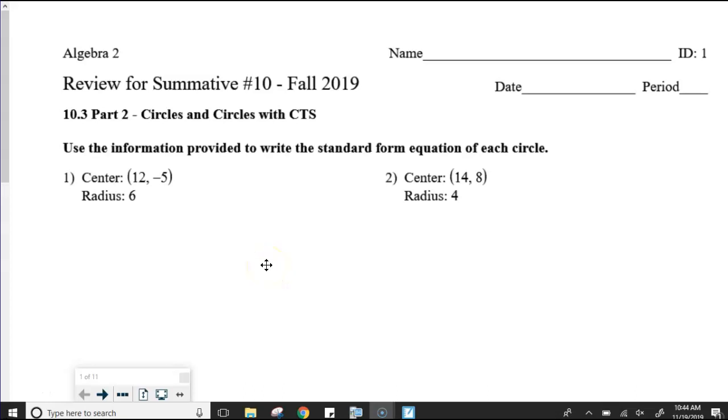Okay, so this is the review for summative number 10 in the fall of 2019 for Algebra 2. We have a new section showing up. This is circles, but we're revisiting it with the completing the square components. You are going to get a new score in a new section here. But first, a little bit of review from circles and what formula we need to use.